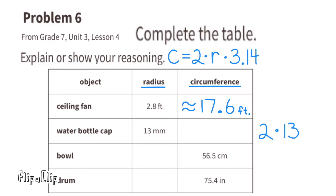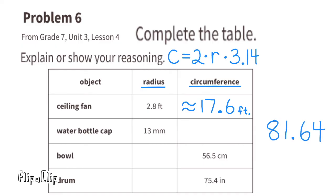For the water bottle cap with radius 13 mm: 2 × 13 = 26, then 26 × 3.14 = 81.64. The circumference is approximately 81.64 mm, which rounds to 81.7 millimeters.